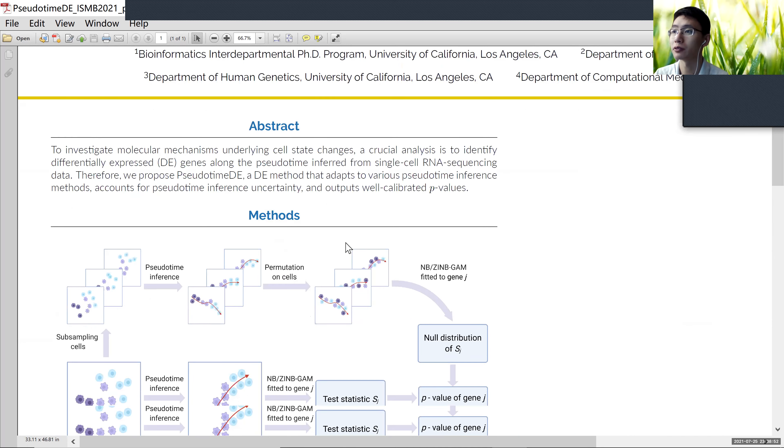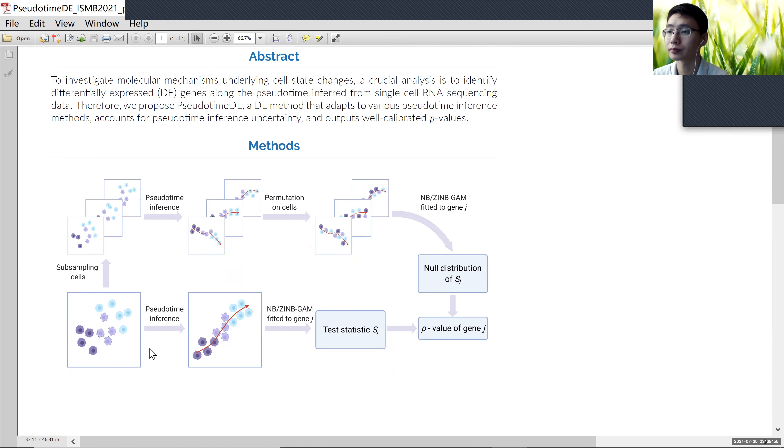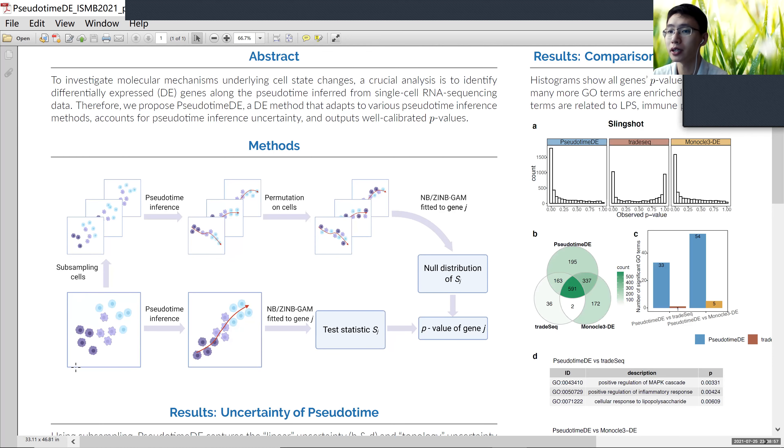First, we want to introduce our method. So here is the original data set of single cells. We perform the pseudotime inference to infer the continuous pseudotime.